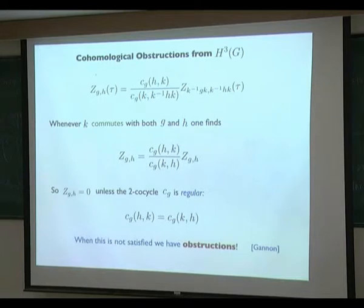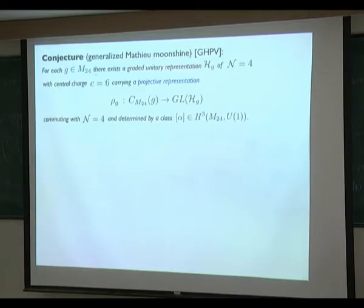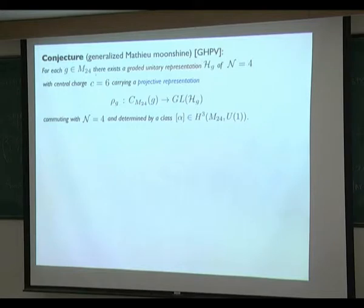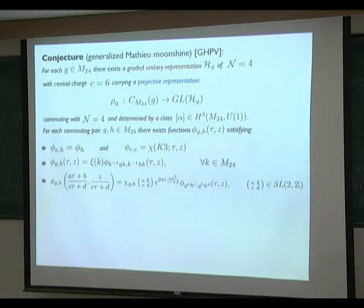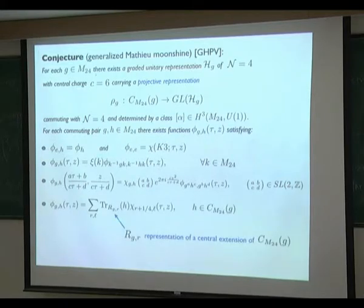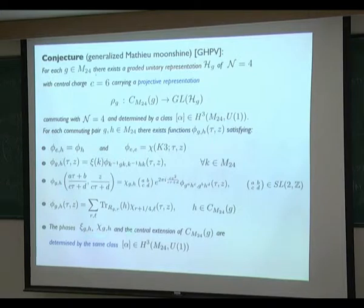Taking all this structure, we made the conjecture that for each element of M24, there should exist a unitary representation of N=4 with central charge 6, carrying a projective representation of the centralizer of G in M24, commuting with N=4, and determined by a certain class in H^3. Moreover, there should be functions that restrict to the twining genera, are class functions up to a phase, are permuted under SL(2,Z) forming a representation of the modular group with phases, decompose into characters of N=4 with projective representations of the centralizer, and have all phases determined by a class in H^3.